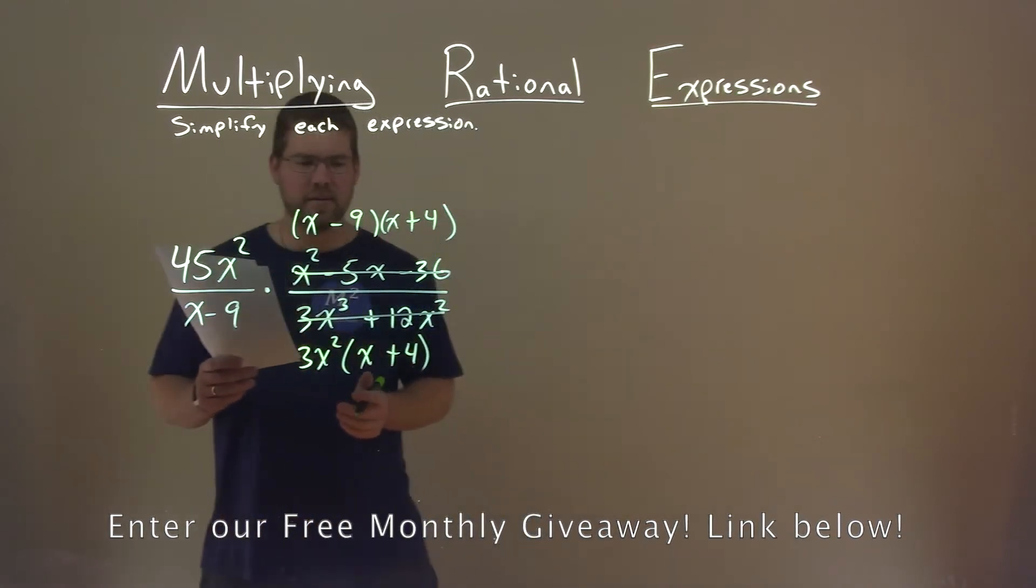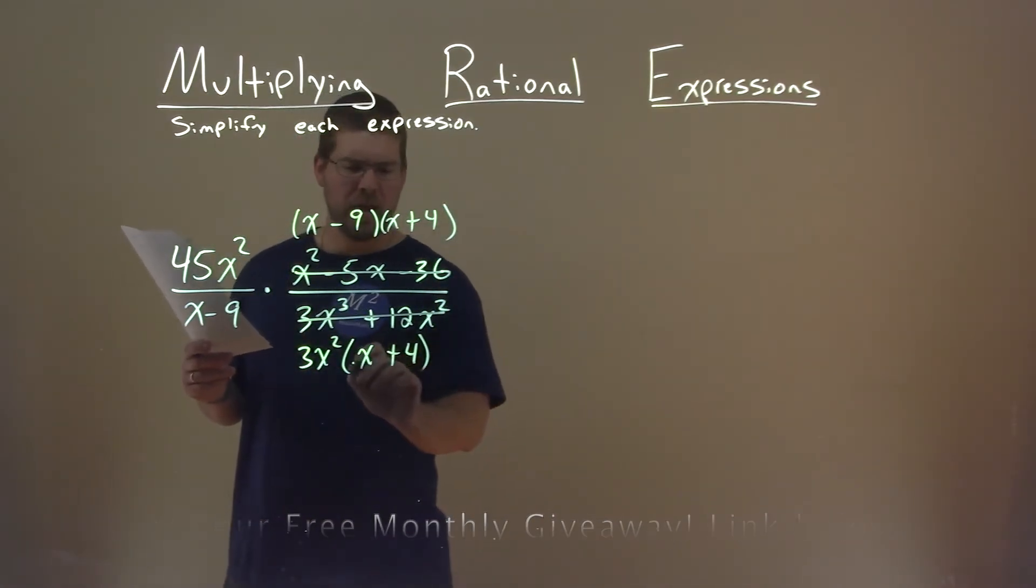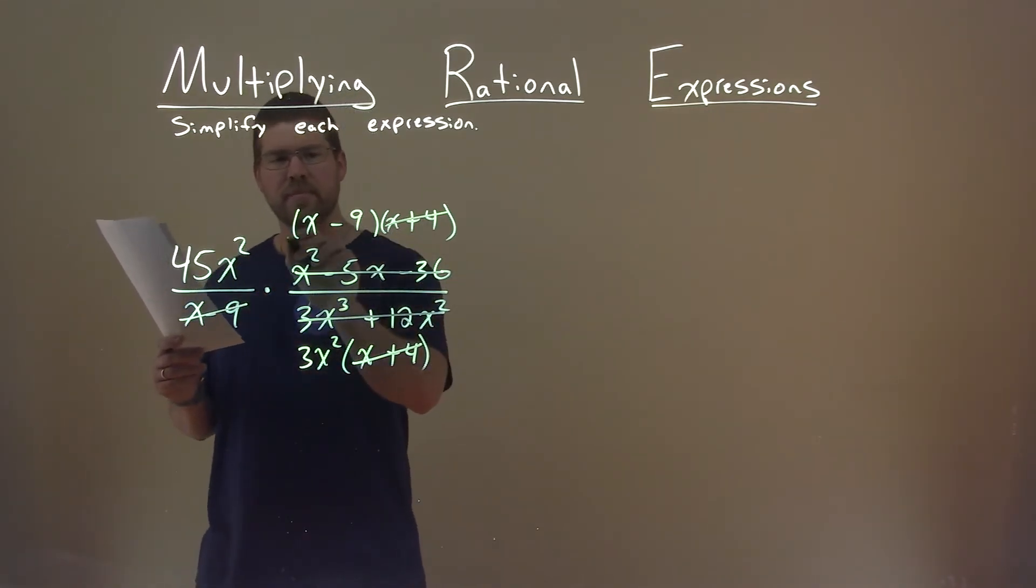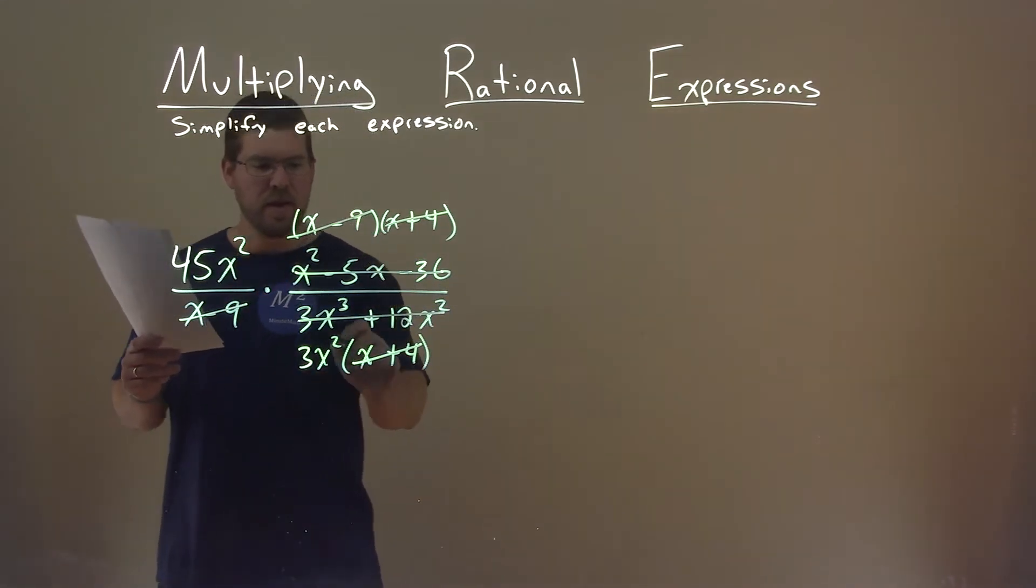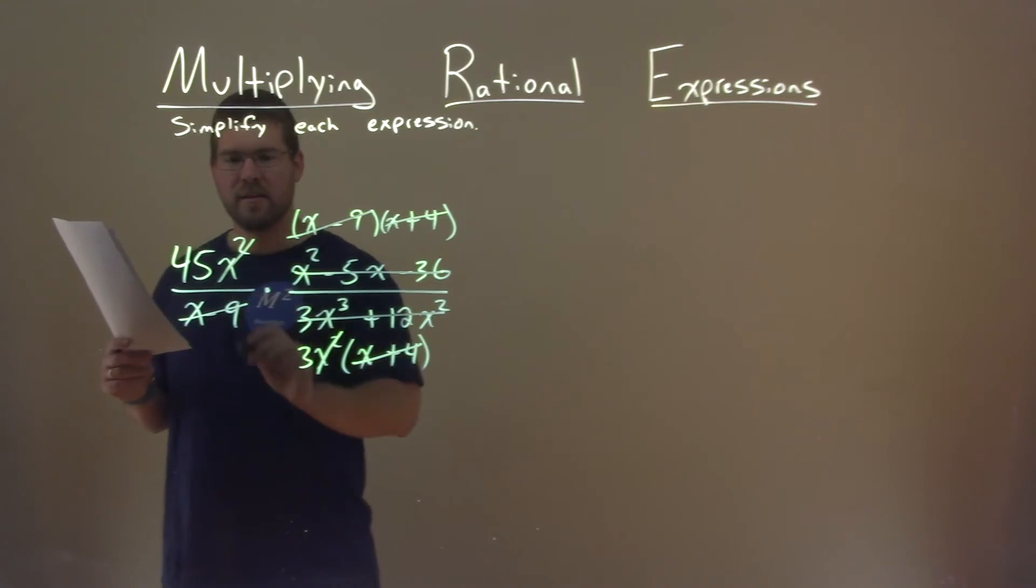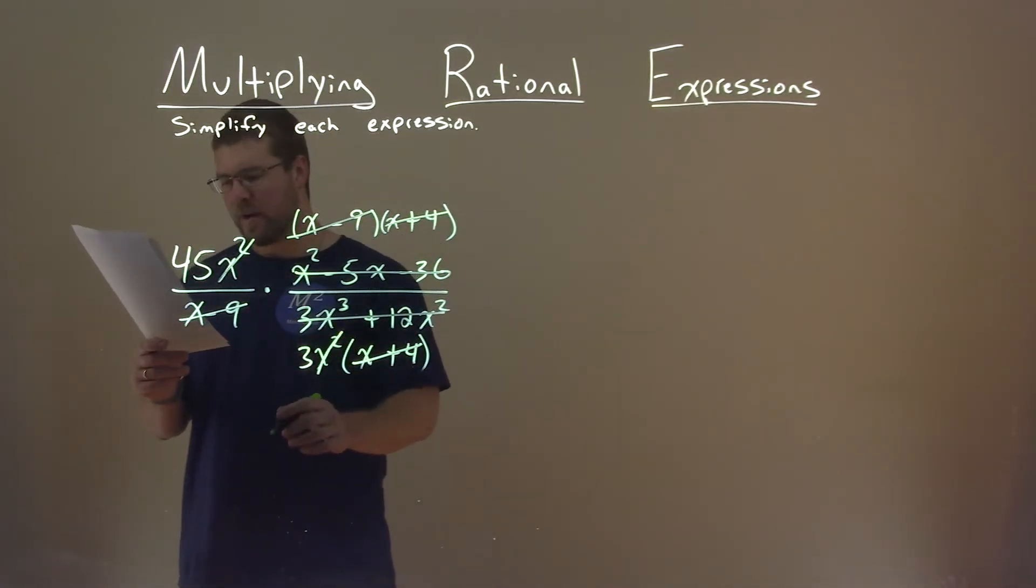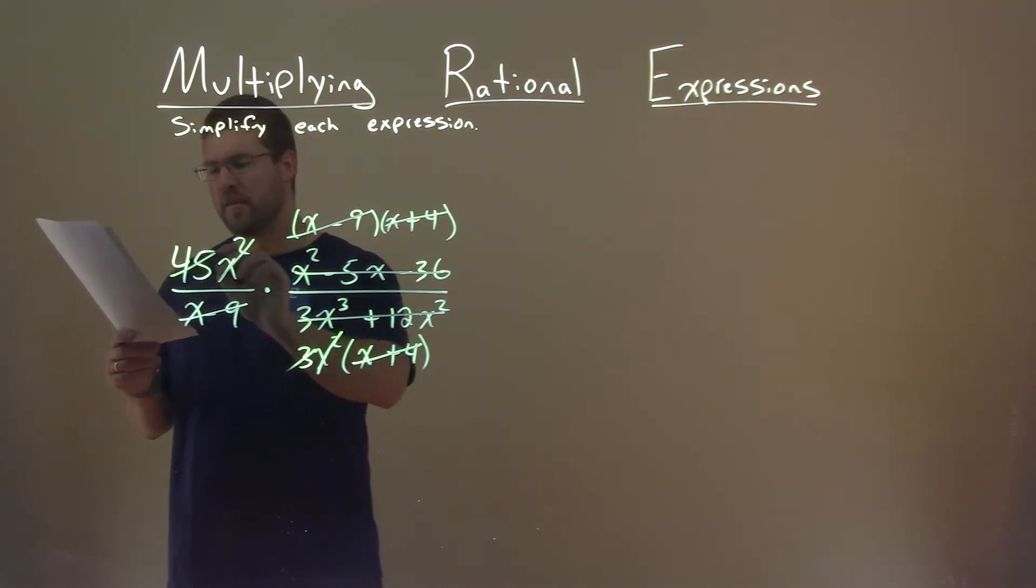Now we need to simplify or cross off what we can. x plus 4, x plus 4 here. x minus 9, x minus 9. x squared and x squared. And well, what's 45 divided by 3? Well, that's 15.